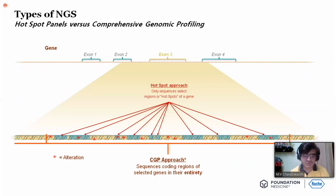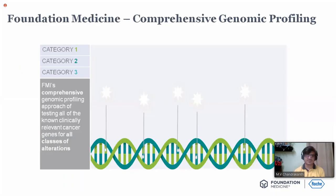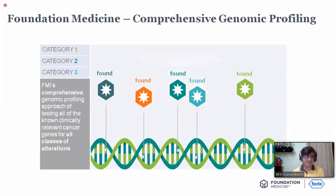I know what the target is and I look only into that target — that is the hotspot approach. Whereas what a comprehensive genomic profile does is: I know where the abnormality is, for example exon 19, and I look into that exon 19 for whatever sequence problem it has — whether it is deletion, alteration, or amplification. I will be able to understand alterations not only in hotspot areas but also in non-hotspot areas. The comprehensive genomic profiling approach sequences coding regions of selected genes in their entirety — the whole gene, whether it has mutated at one site or other sites.